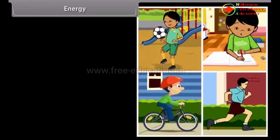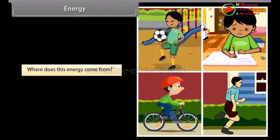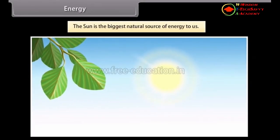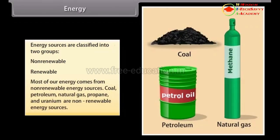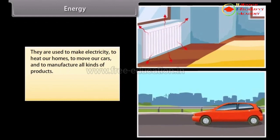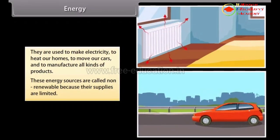Energy. To do any kind of work, we need energy. The sun is the biggest natural source of energy to us, and many of our energy sources are derived from the sun. Energy sources are classified into two groups: non-renewable and renewable. Most of our energy comes from non-renewable energy sources — coal, petroleum, natural gas, propane, and uranium. They are used to make electricity, heat our homes, move our cars, and manufacture products. These sources are called non-renewable because their supplies are limited.